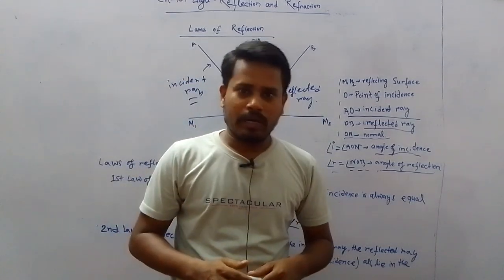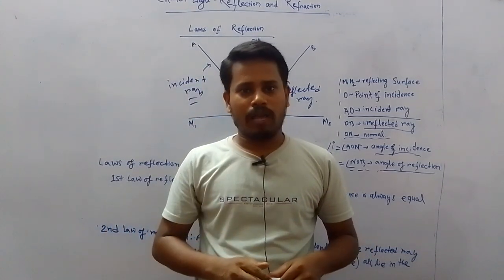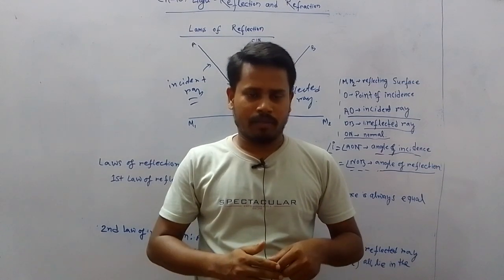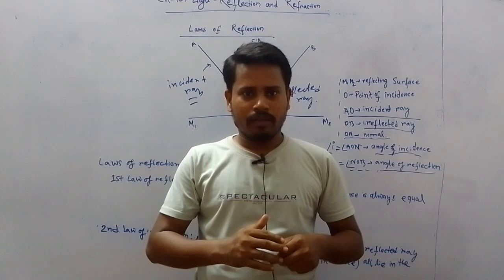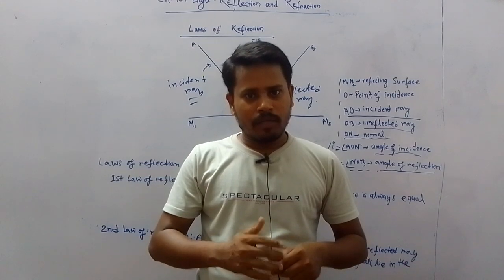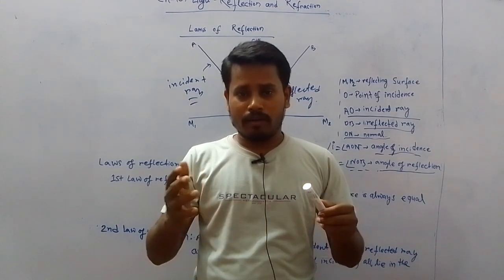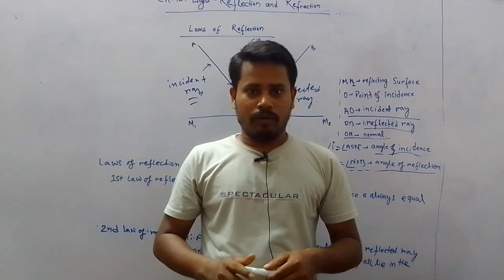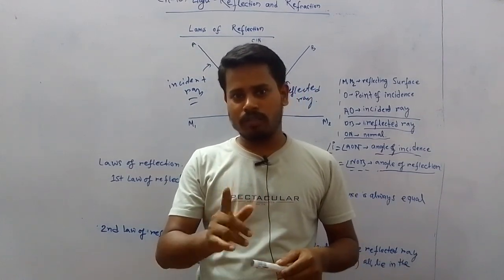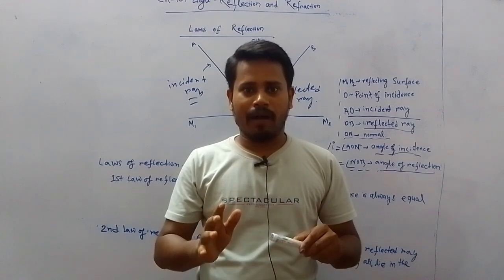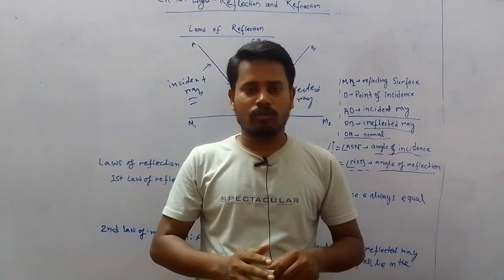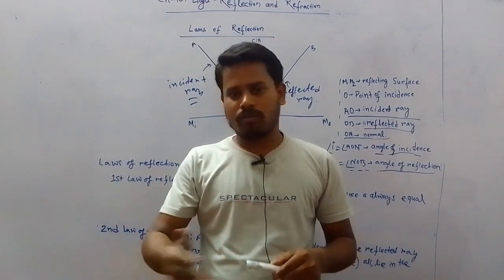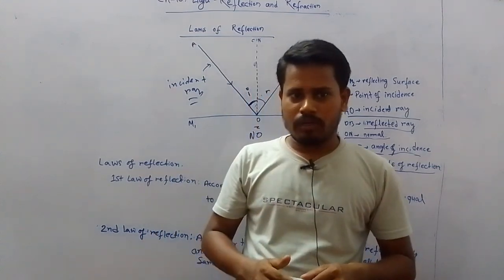Now let us discuss two important laws of reflection. These laws are valid everywhere. Whether the reflection is regular or irregular, the laws of reflection always hold. Laws of reflection cannot be violated by any type of reflection or any type of surface. If reflection takes place on a smooth surface or a rough surface, the laws of reflection are always valid.